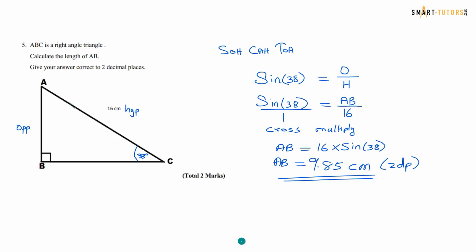Question number 5 is a basic trigonometry question. ABC is a right-angle triangle — calculate the length of AB, giving your answer to two decimal places. Use the SOH-CAH-TOA rule. The angle 38 is given, the opposite side is the unknown AB, and the hypotenuse is 16. Opposite over hypotenuse is sine, so sine 38 equals AB over 16. Cross-multiply and you will end up with AB equal to 9.85.